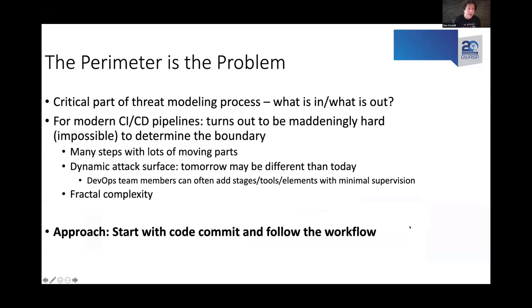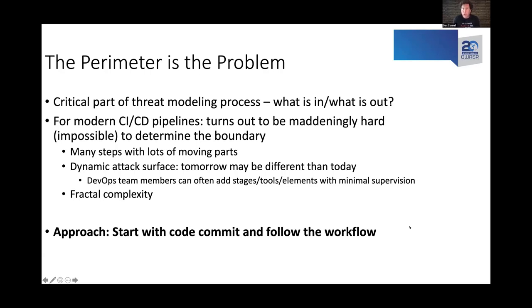A real challenge with modern tooling is the perimeter — it's a critical part of the threat modeling process to understand what's in scope and what's out of scope. For modern CI/CD pipelines using a lot of cool tooling, this turns out to be extremely difficult — often impossible — to find the boundary. There are lots of moving parts, and what it looks like today may not be what it looks like later. With actions and apps and plugin mechanisms, those plugins get loaded from who knows where, and code running from anywhere — unless constrained — is potentially going to send your code elsewhere for analysis, archiving, or whatever.